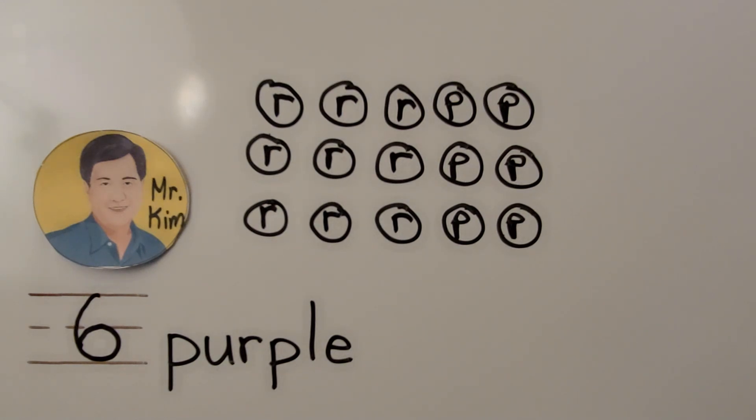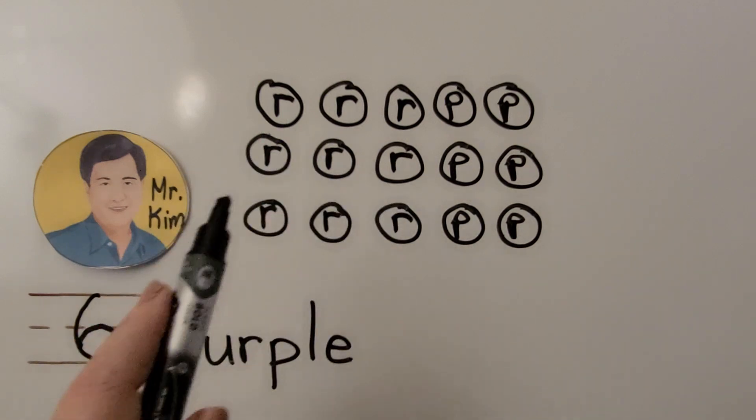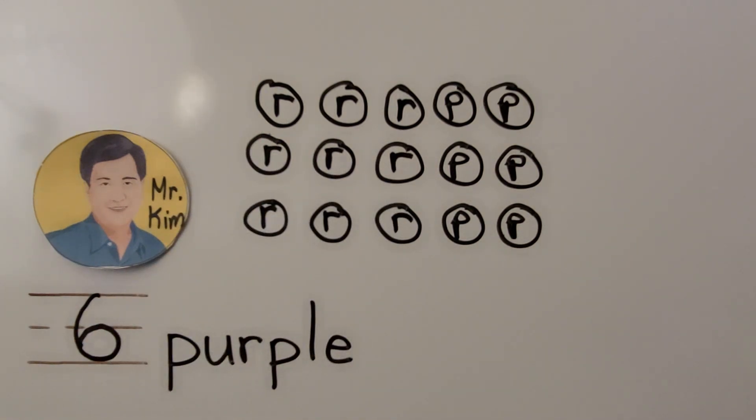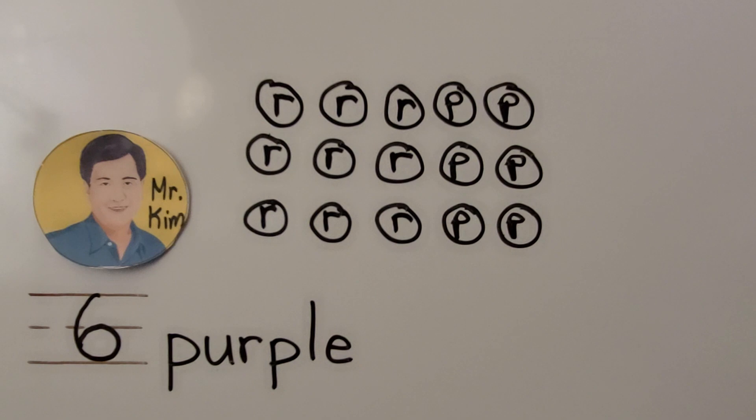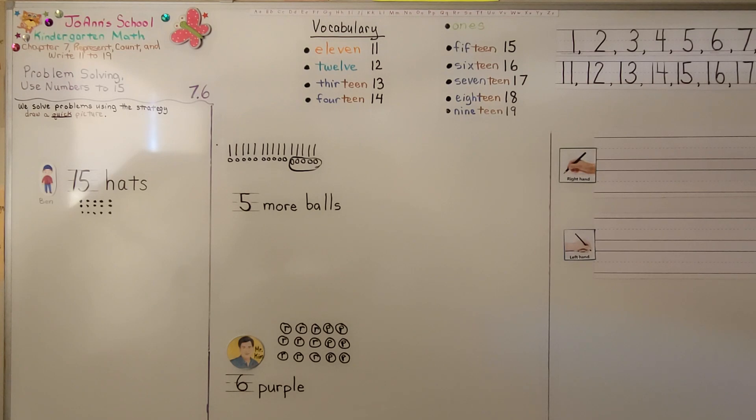So remember, we don't need to draw 15 flowers with leaves and color them. We just need to draw a quick picture, that means a fast picture, that will help us solve the problem. By using the letter R for red and P for purple, we didn't have to waste time coloring them with different colors. So the most important thing I want you to remember from this lesson is that we can draw a quick picture to help us solve a problem. And the other important thing is that it's a quick picture. It's a fast picture.